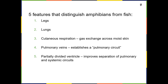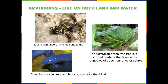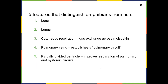The first appearance of pulmonary veins creates a second circuit of blood flow. Fish only have a single circuit: blood flows through the heart, goes over the gills to pick up oxygen, then goes to the rest of the body, and returns back to the heart. For amphibians, there's a second circuit — blood goes to the heart, then out to the lungs, then back to the heart, and then out to the body.